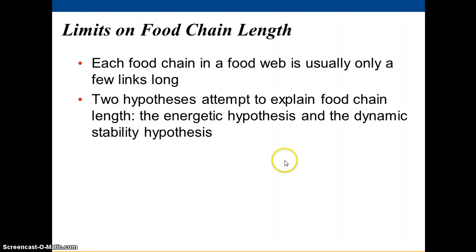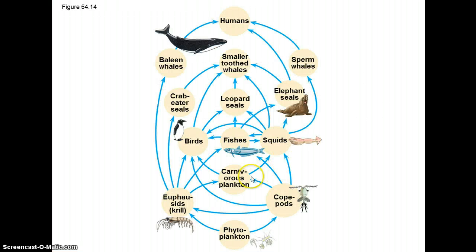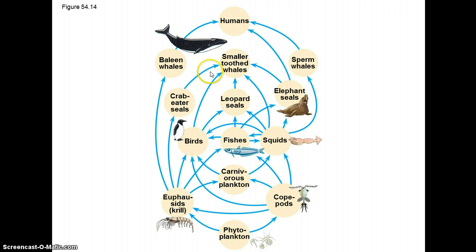You'll notice that these food chains have a limited number of links — five or four links in these examples. These links in food chains are limited; you never see food chains that have ten links, or even really anything much beyond five or six. Why is that?